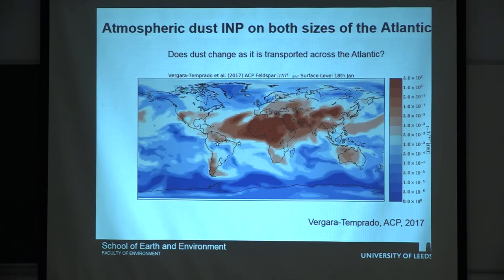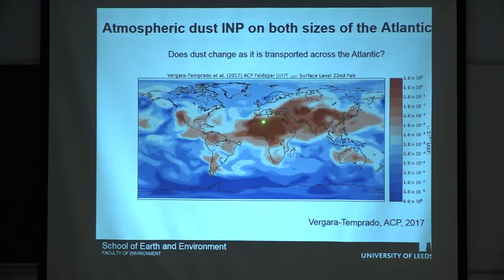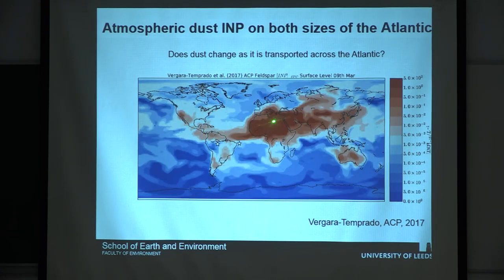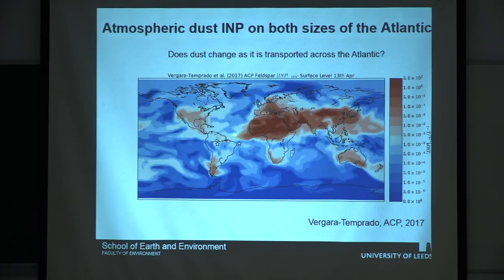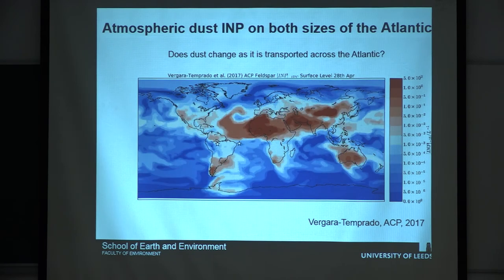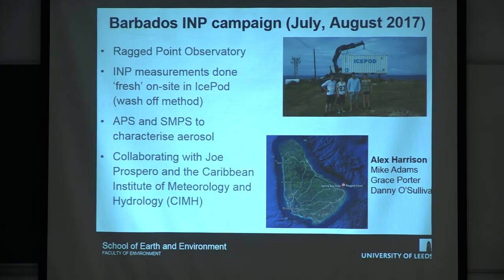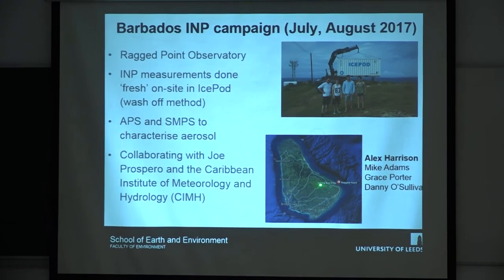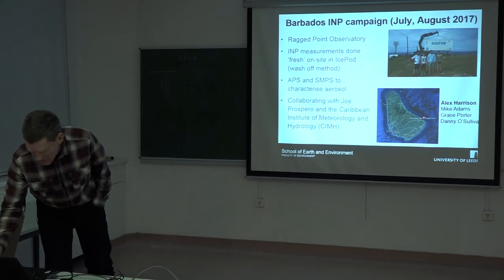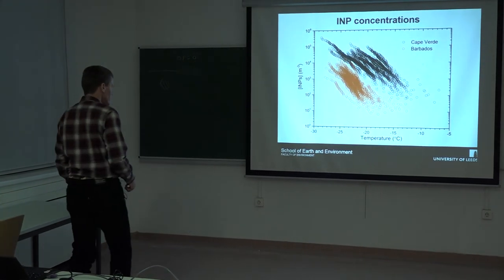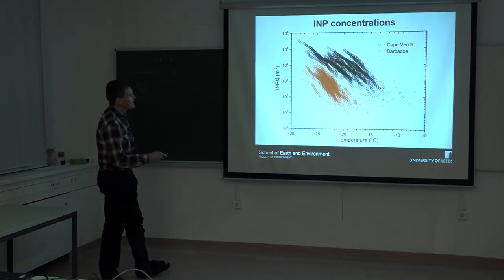This computer model was run by one of our PhD students, now in Zurich, showing ice nucleating particle concentration going across the Atlantic — feeding feldspar into the model and running it, showing it travelling across the Atlantic. We've made measurements on the African side, and now we want to go to the other side of the Atlantic — to Ragged Point in Barbados — to look at what concentrations are getting there and what happens to the mineral dust as it's transported in that direction.